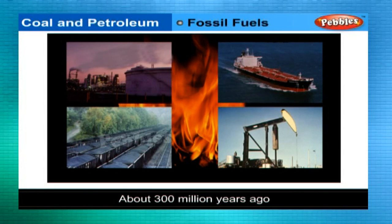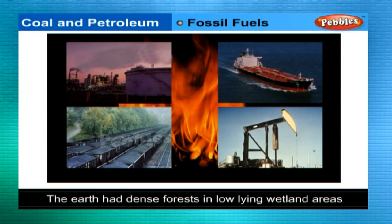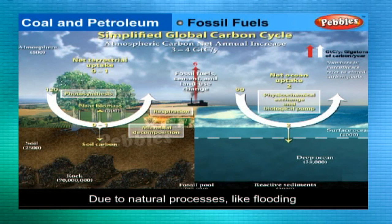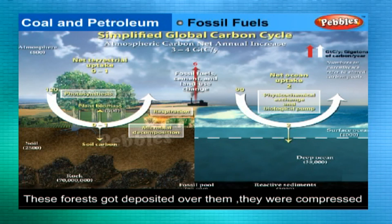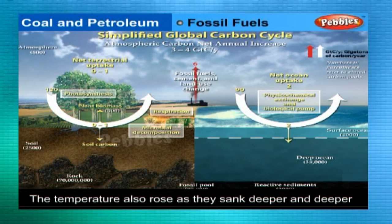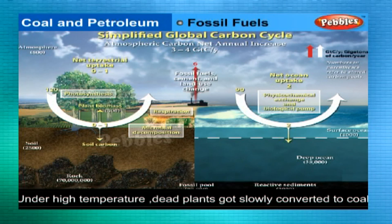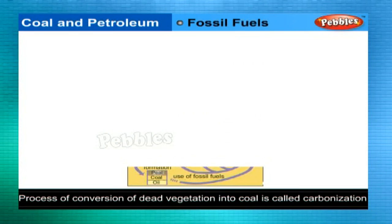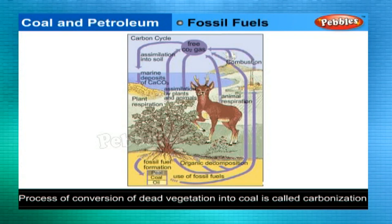About 300 million years ago, the earth had dense forests in low-lying wetland areas. Due to natural processes like flooding, these forests got deposited and compressed. The temperature also rose as they sank deeper and deeper. Under high temperature, dead plants got slowly converted to coal. The slow process of conversion of dead vegetation into coal is called carbonization.